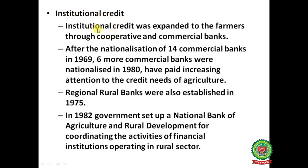Institutional credit was expanded to farmers through cooperative and commercial banks. After the nationalization of 14 commercial banks in 1969, six more commercial banks were nationalized in 1980, paying increased attention to the credit needs of agriculture. Regional Rural Banks were also established in 1975. In 1982, the government set up the National Bank for Agriculture and Rural Development (NABARD) for coordinating the activities of financial institutions operating in the rural sector.